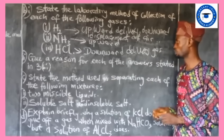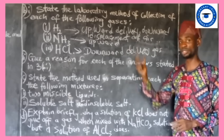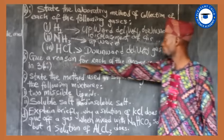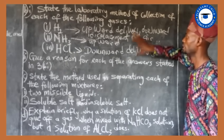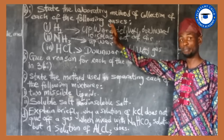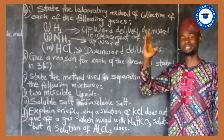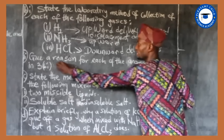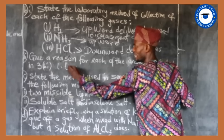Now we move to the reasons why gases are collected by these methods. Remember, we need to give a reason for each answer in this section. Why is the collection method for hydrogen gas upward? The reason is that hydrogen gas is less dense — lighter — than air.